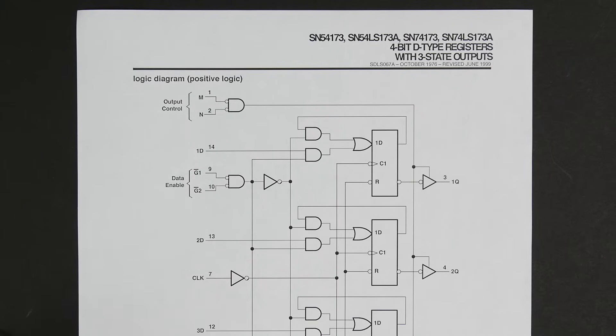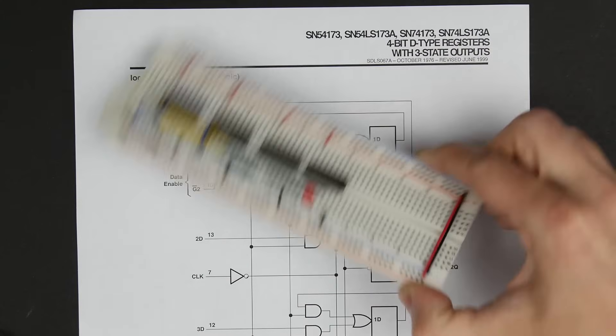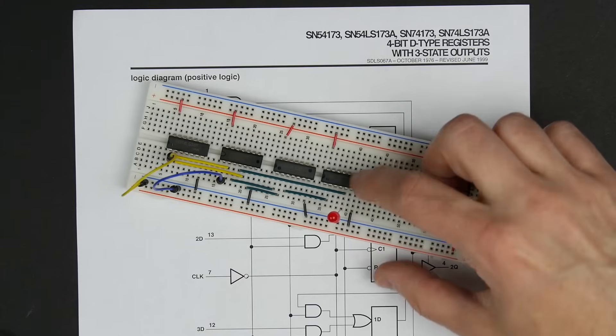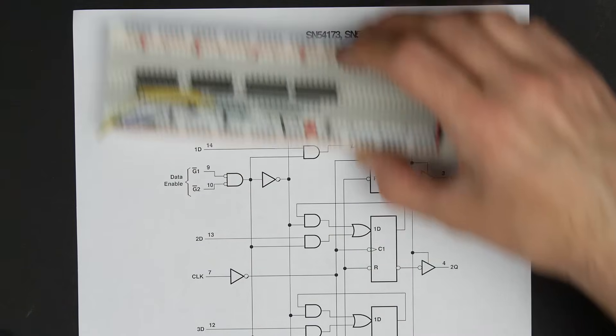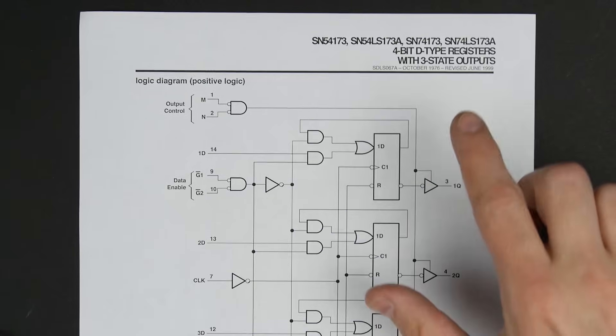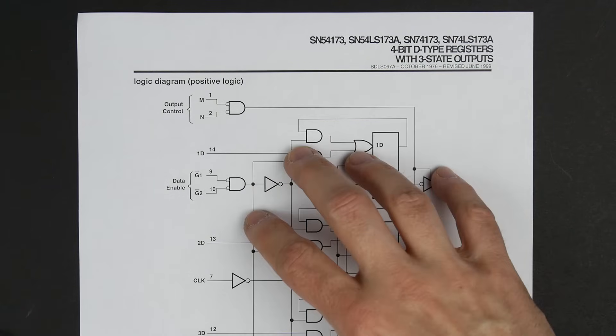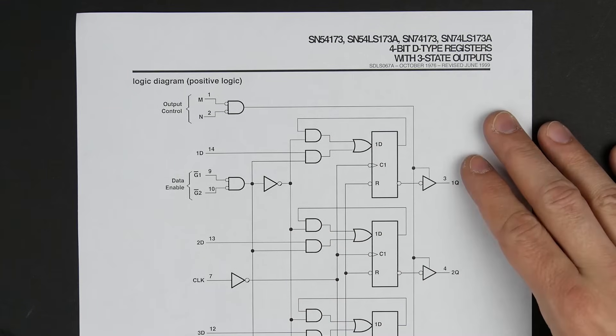So in the last video, we took a look at building registers, and we actually built a one-bit register using somewhat discrete logic. We did use a D-flip-flop. But then I also talked about the 74LS173, which is basically a four-bit register on a chip, and how we were going to use that.